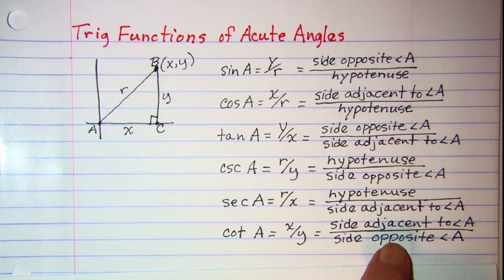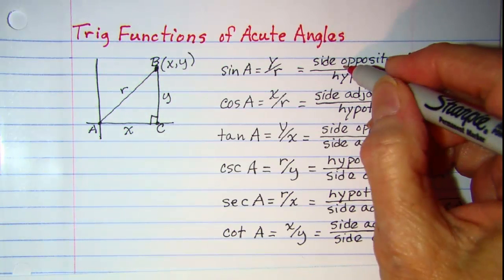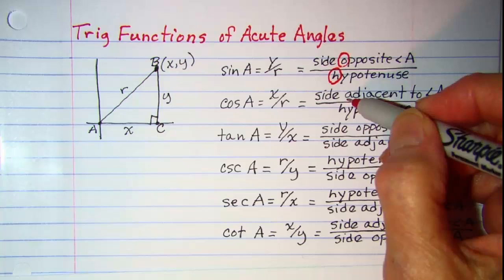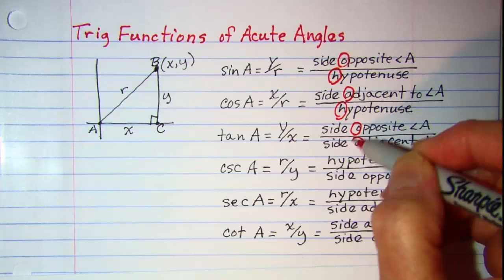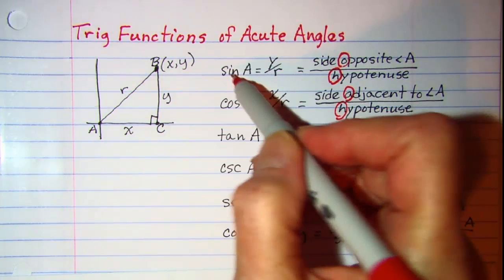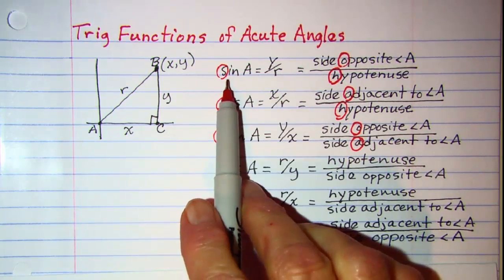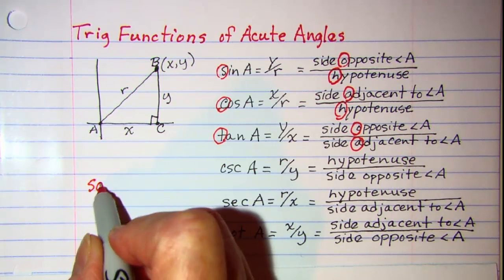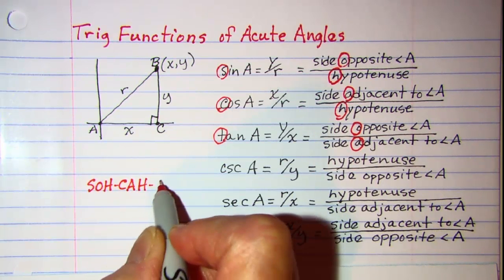Now there is a little saying to help you remember the first three. It just uses these first letters: the O and the H, and the A and the H, and then the O and the A. And then we use the first letters of our trig functions. So the little saying is SOHCAHTOA. Let me write it and then I'll explain it. SOHCAHTOA.